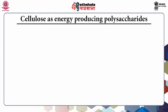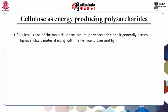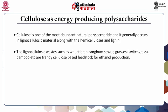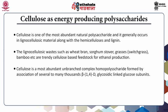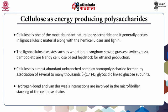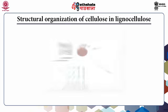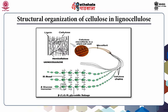Cellulose as energy-producing polysaccharide: cellulose is one of the most abundant natural polysaccharides and generally occurs in lignocellulose material along with hemicellulose and lignin. Lignocellulose waste such as wheat bran, sorghum stover, grasses, and bamboo are a trendy cellulose-based feedstock for ethanol production. Cellulose is an unbranched complex homopolysaccharide formed by many thousands of beta-1,4 linked D-glucose subunits; hydrogen bonds and van der Waals interactions are involved in the microfibrillar stacking of cellulose chains.